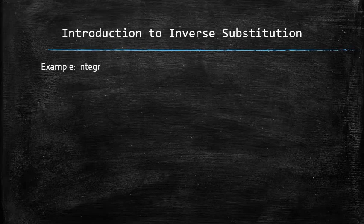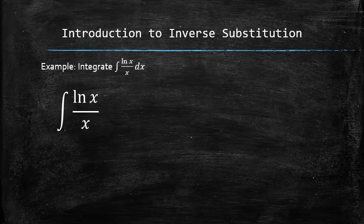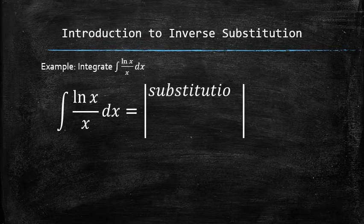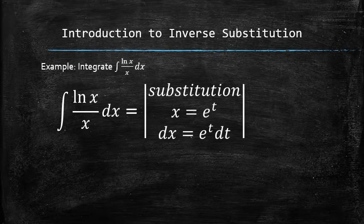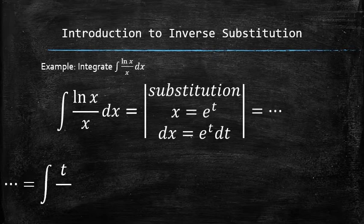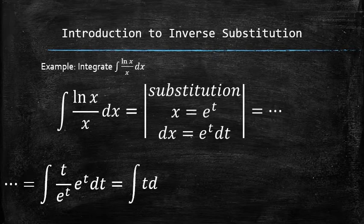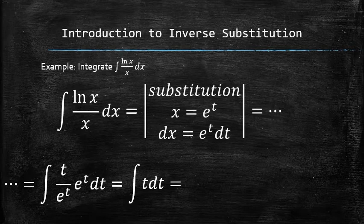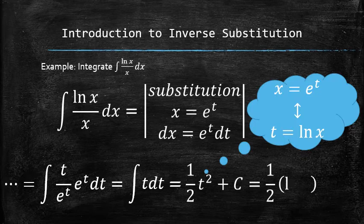Now let's see how a reverse substitution can be used to do the same problem. We set up the substitution by replacing the original variable x with the natural exponential function of t and finding the differential of x in terms of t. Next, we plug everything into the original integral and notice how after simplifying, we have nothing but a function of t left in the integrand. We finish the process by finding the antiderivative and replacing t with the natural logarithmic function. Notice that we got the same exact answer as in the previous example.